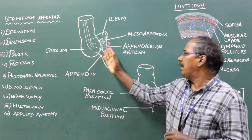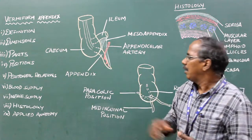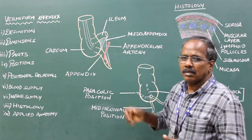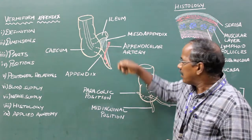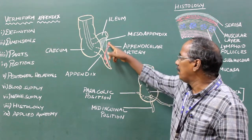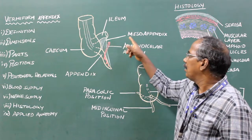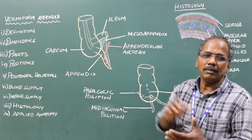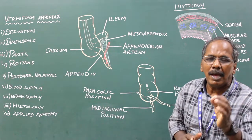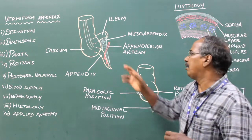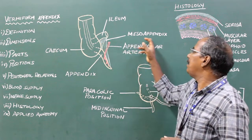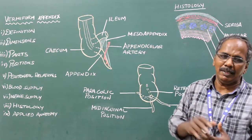Peritoneal Relations. The appendix is suspended by a triangular fold of peritoneum known as the mesentery of the appendix, or meso-appendix.